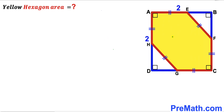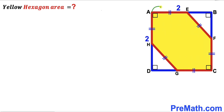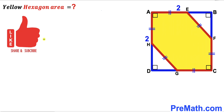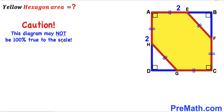Welcome to PreMath. In this video we have a yellow shaded hexagon fully inscribed in a blue square ABCD, such that all side lengths of this yellow hexagon are equal in length. The side length of the square is 2 units. Our task is to calculate the area of this yellow shaded hexagon. Please don't forget to give a thumbs up and subscribe. This figure may not be 100% true to scale.